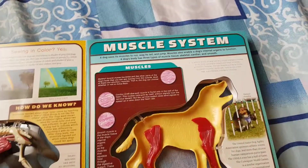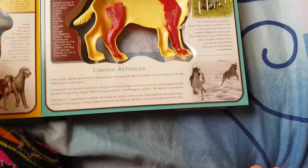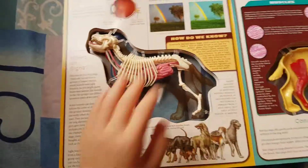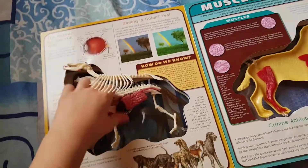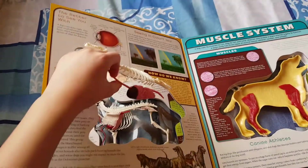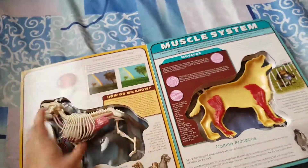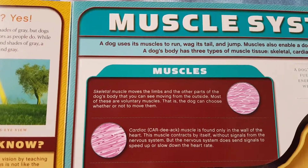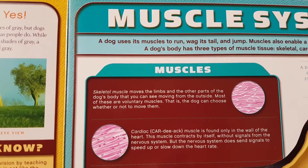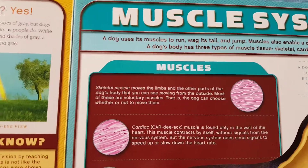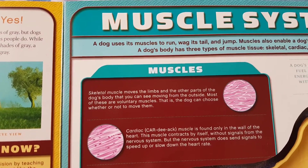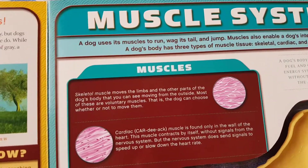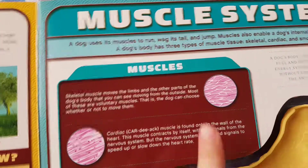And here we have the muscle system — so far this is how the dog is going, it's building up. Skeletal muscles move the limbs and the other parts of the dog's body that you can see moving from the outside. Most of these are voluntary muscles — that is, the dog can choose whether or not to move them.